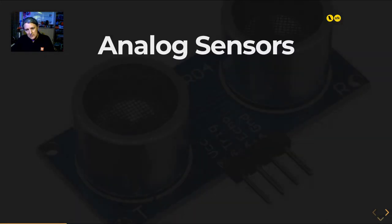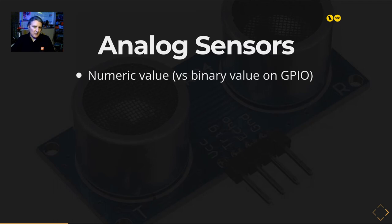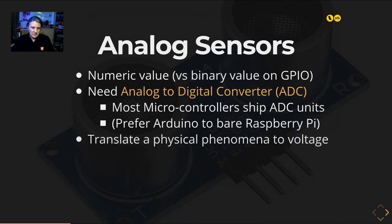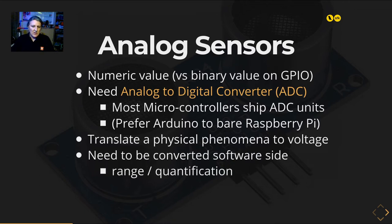Now analog sensors: they produce a numerical value — not a boolean. You need an analog-to-digital converter (ADC). Most microcontrollers have this, but a Raspberry Pi does not — you need an extra component to use analog input sensors. Basically, the sensor translates a physical phenomenon to a voltage. This produces a number in a range and you need some computation in software to understand what it's actually measuring.